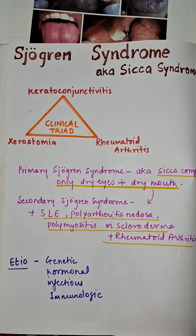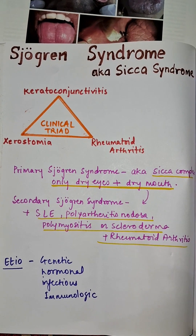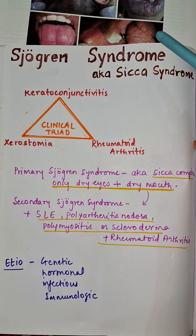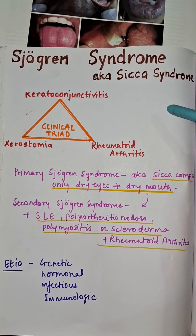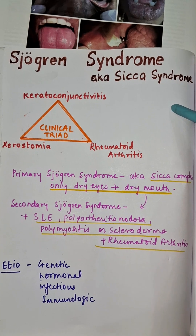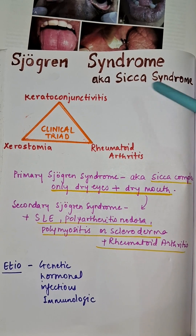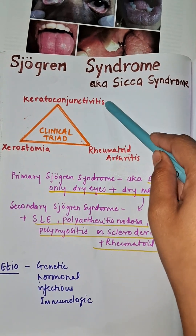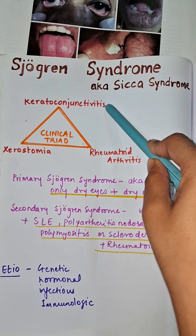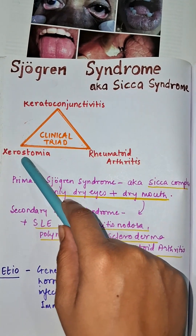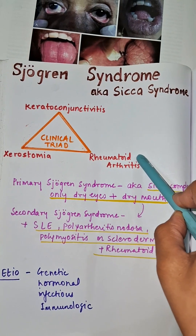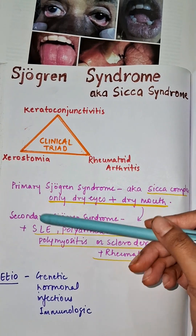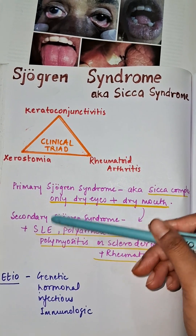Hello everyone, let's revise one topic in one minute. Today it is Sjogren's syndrome, also known as Sicca syndrome, which is a classic clinical triad of keratoconjunctivitis sicca, xerostomia, and rheumatoid arthritis, which presents as a primary and secondary syndrome.